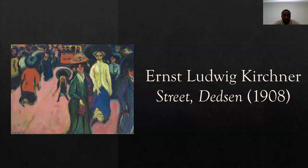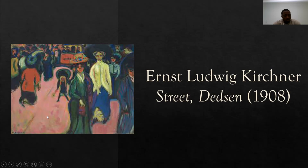Our next piece is an Expressionist work by Ernst Ludwig Kirchner called Street Dresden, made in 1908. This really explored the expressive possibilities of color, form, and composition in creating images of contemporary life. As you can see, the crowds are in the back — you can see a number of people representing a busy day on the street. The art depicts the world with a pink street, which really helps set the scene of what's going on. It's just crowded with a lot of people, and the use of colors is great.